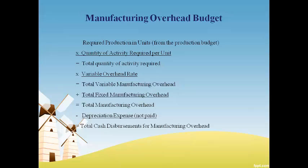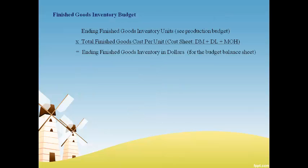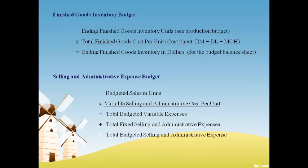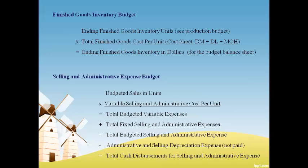The finished goods budget is used to prepare the budget balance sheet. The quantity of desired ending inventory is multiplied by the total cost for each unit to get the total value of finished goods at the end of the period. The selling and administrative expense budget must consider that some costs are variable and some are fixed. Variable is based on the units expected to be sold, while fixed is the total amount expected to be incurred for the period. Depreciation expense is subtracted because it will not be paid. This budget estimates the amount of cash that will be paid during the period and assumes that payment will occur in the period the expense is incurred.